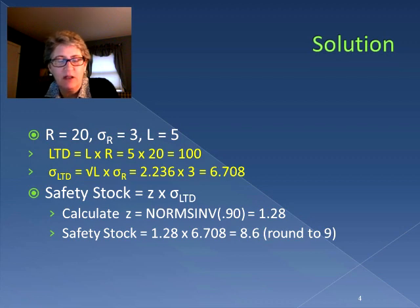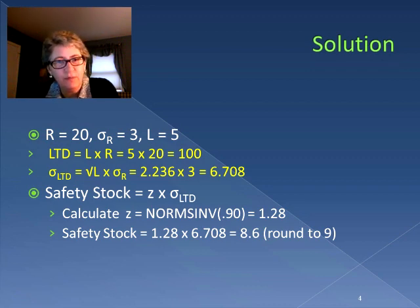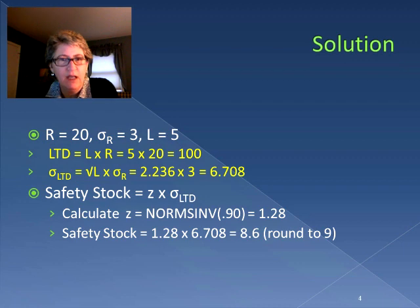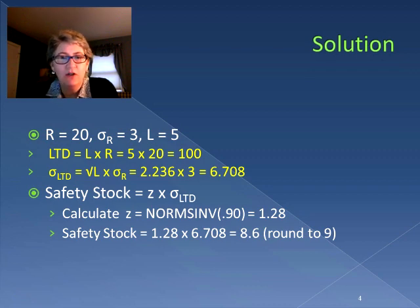The lead time demand equals lead time times demand: 5 times 20 equals 100 ink cartridges — that's how many we expect to use between placing and receiving the order. For the standard deviation of the lead time demand, we take the square root of 5 and multiply it by the standard deviation of the demand, giving us 6.708. We've now calculated both the lead time demand (LTD) and the standard deviation of the lead time demand.